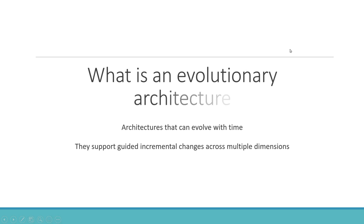What is an evolutionary architecture? Simply put, that means whatever architecture we design today should actually last for years and years. It should evolve with time. It should support guided incremental changes across multiple dimensions. Essentially, an architecture should be so flexible, adaptable, and extensible that it is able to evolve with time.